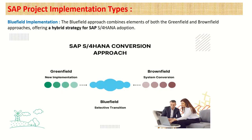One more type is bluefield, which we can call a combination of both greenfield and brownfield. Here, we implement a new system along with selective data migration from the old system — not all the data, just specific records. For example, if there are 1,000 vendors in the old system but only 100 are currently relevant, we migrate only those. This selective transition is called bluefield.